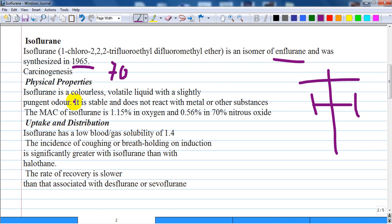Physical properties: isoflurane is a colorless, volatile liquid with a slightly pungent odor. It is stable and does not react with metals or other substances. It does not require preservatives and isoflurane is non-flammable in clinical concentrations. The minimum alveolar concentration of isoflurane is 1.15% in oxygen and 0.56% in 70% nitrous oxide.